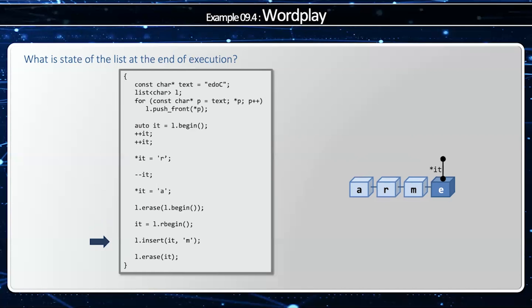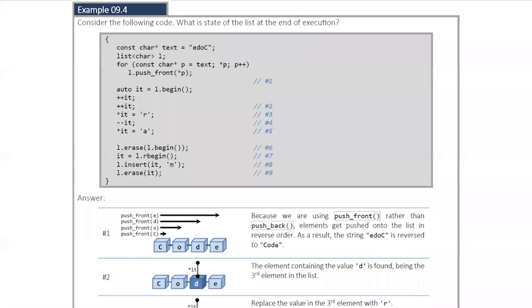Notice how the iterator will still point to the E. The last thing I'm going to do is remove the element that the iterator points to. In this case it's going to point to the E, so that's going to leave me with ARM. This is example 9.4 in the C++ Data Structures textbook.